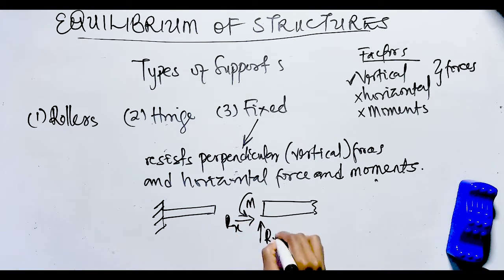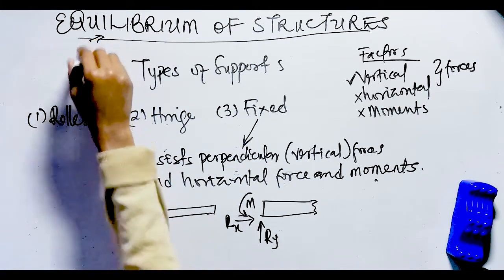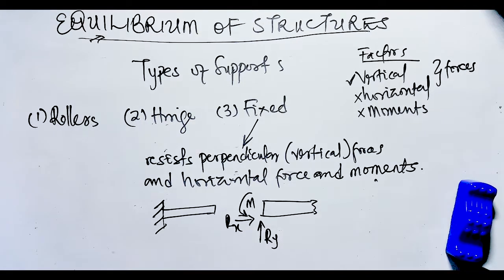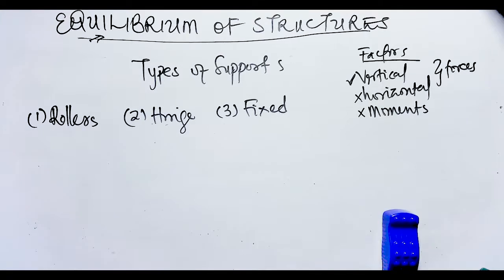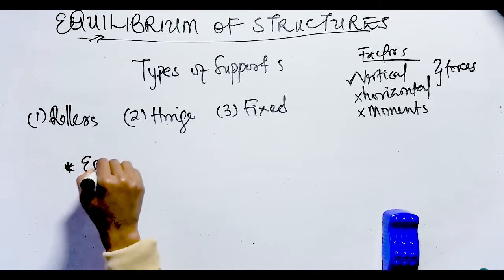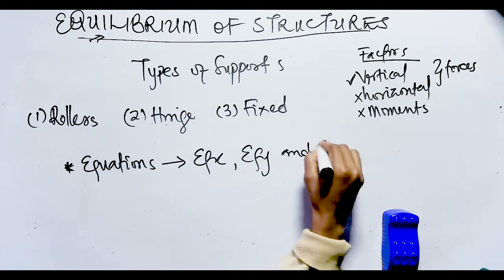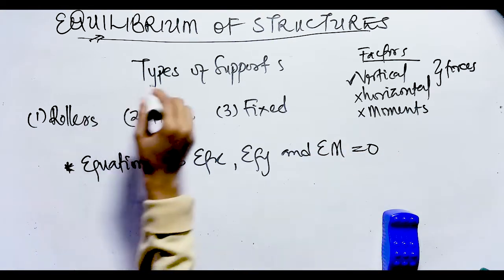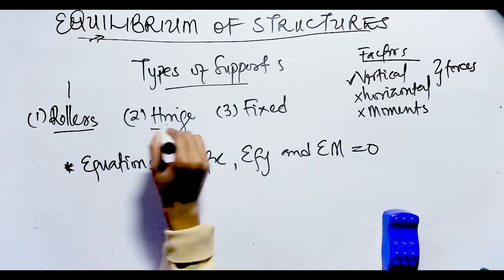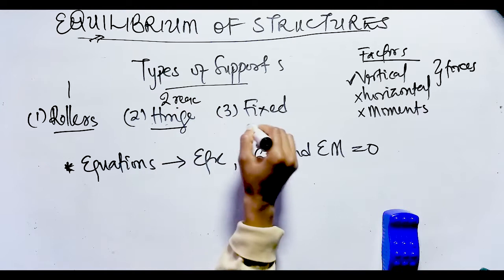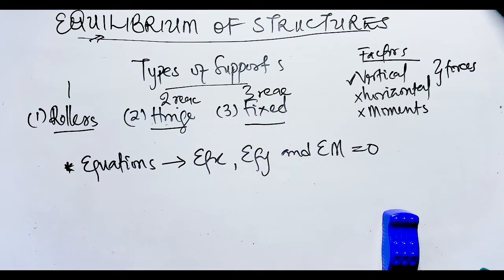That'll be all for today. Let's do a recap: we talked about equilibrium of structures — a structure is in equilibrium if, initially at rest, it remains at rest when subjected to forces and couples. We looked at the three equations of equilibrium: ΣFx = 0, ΣFy = 0, and ΣM = 0. We also covered the types of supports — roller support with one reaction, hinge support with two reactions, and fixed support with three reactions. Thanks for watching; don't forget to subscribe, like, share, and drop your comments!